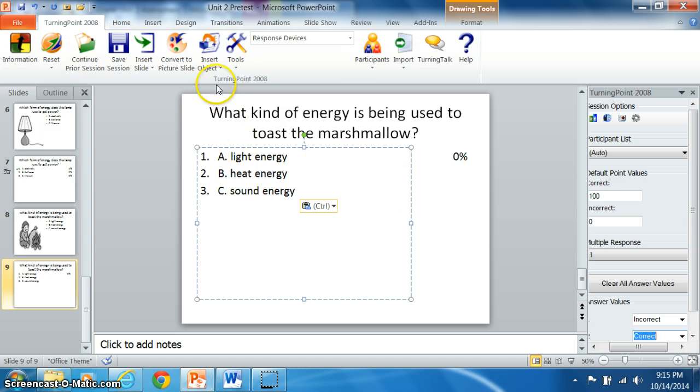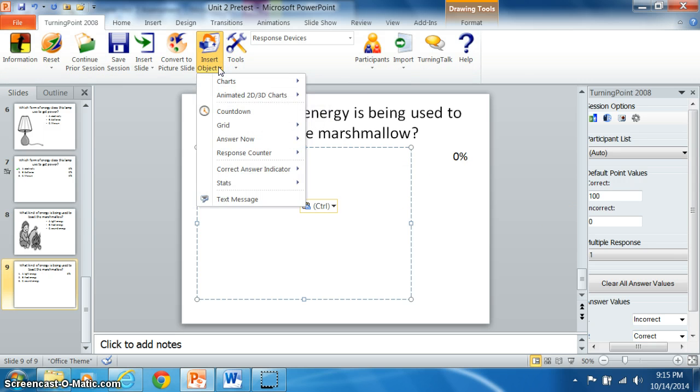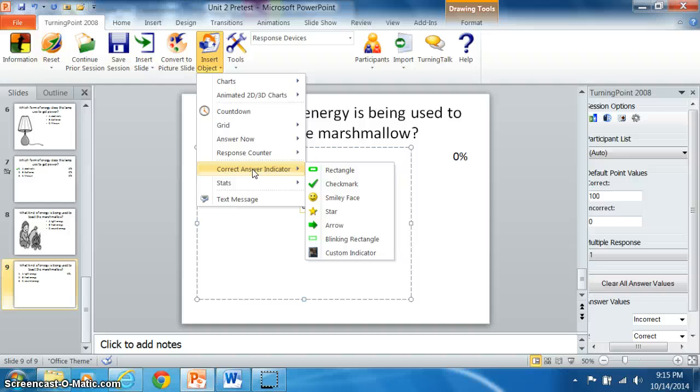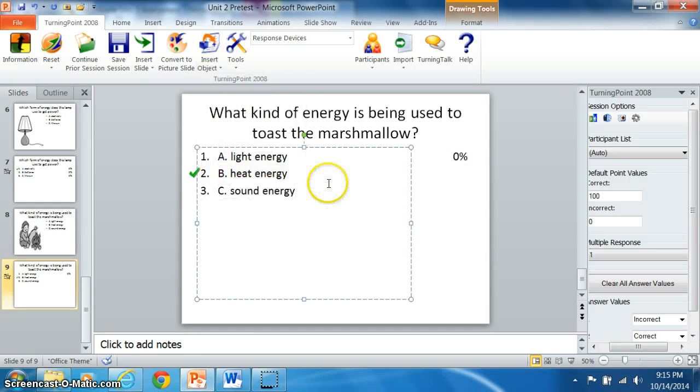After that, I'm going to go here to insert objects and I'm going to insert a correct answer indicator. This basically lets the students know that they have selected the correct answer. Once I know that everything is good on my end, I'm going to go ahead and save this presentation, save all the information that I've inserted.